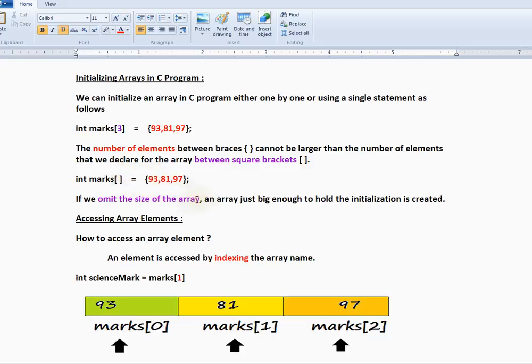How to access an array element? You can access an array element using index number. Look at this picture: 93, 81, 97. These are the three numbers at 0th index, 1st index and 2nd index.